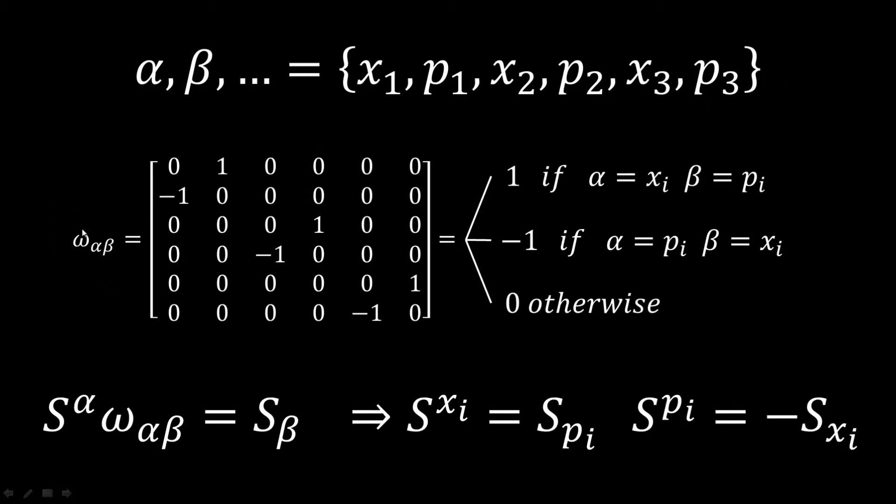When we introduce this matrix, omega alpha beta, where the alpha are going to come from this side and the beta are going to come from this side. And we are going to set them as 1 if we are starting from the x and we are ending in p. And we are going to set them as minus 1 if we are starting from p and we are going to come to x. So we have this matrix that is basically mostly zero except 1 and minus 1. In terms of this matrix, we can write that S upper alpha times omega alpha beta is equal to S lower beta. And this equation corresponds to those two equations that we had before for the cross x and p term.